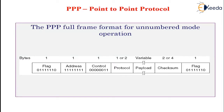When the user is finished, NCP tears down the network layer connection and frees up the IP address. Then LCP shuts down the data link layer connection. Finally, the computer tells the modem to hang up, releasing the physical layer connection.